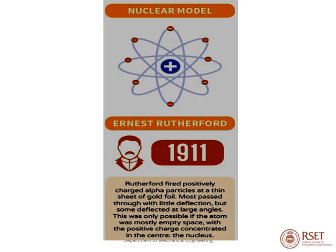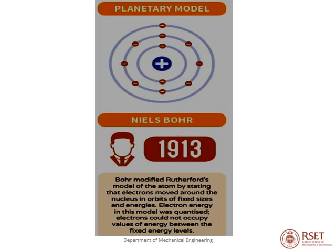The planetary model by Niels Bohr in 1913 was widely accepted at the time. Bohr modified Rutherford's model by stating that electrons moved around the nucleus in orbits of fixed sizes and energies. Electron energy was quantized; electrons could not occupy values of energy between the fixed energy levels. However, this model has a limitation in that it disobeys Heisenberg's uncertainty principle.